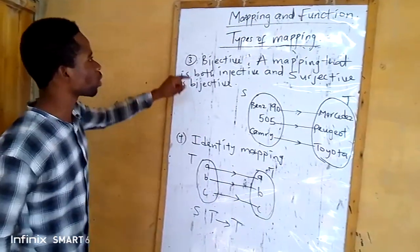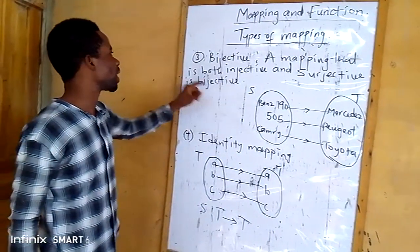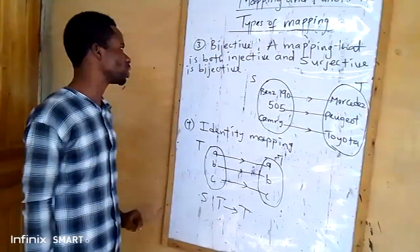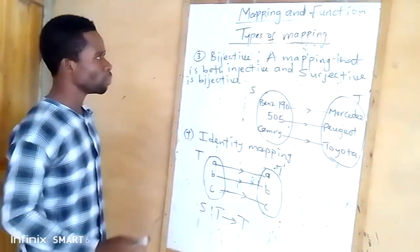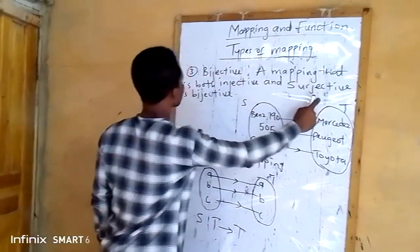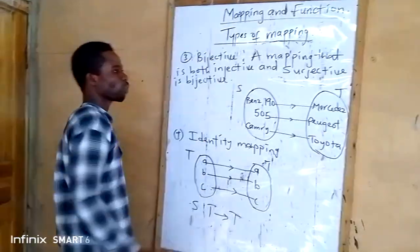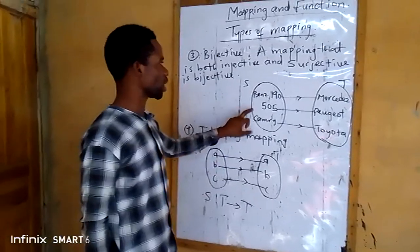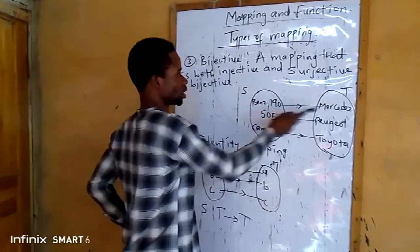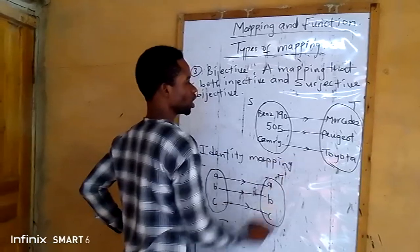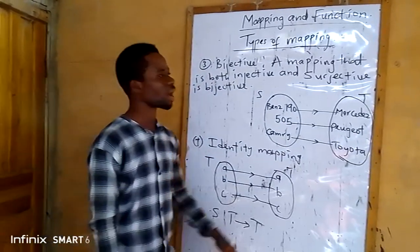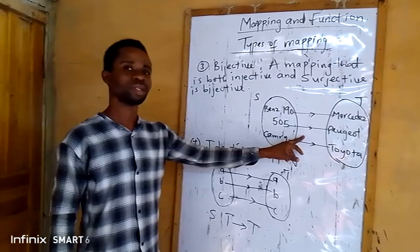A mapping that is both injective and surjective is bijective. If you look at these mapping diagrams, each element is uniquely paired. Since each element is uniquely paired, we can refer to this one as injective.